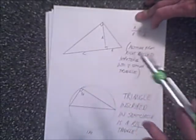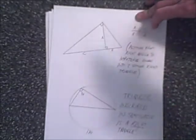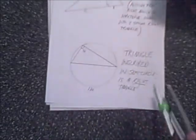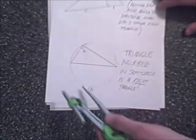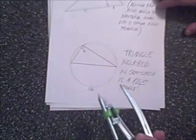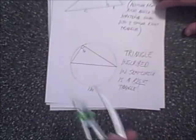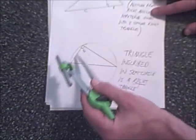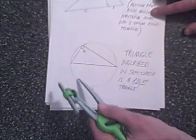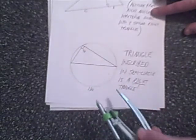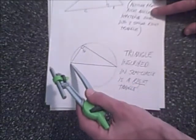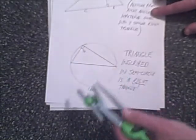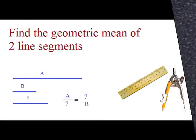Those three similar triangles lead to the fact that the altitude is related to the two segments formed by splitting the hypotenuse — that's where you get the similarity ratio. The other thing you need to know is inscribing a right triangle into a circle. When you inscribe an angle into a circle, the angle is half the arc measurement. In the case of a semicircle, it's a 180-degree arc, so the inscribed angle is 90 degrees.